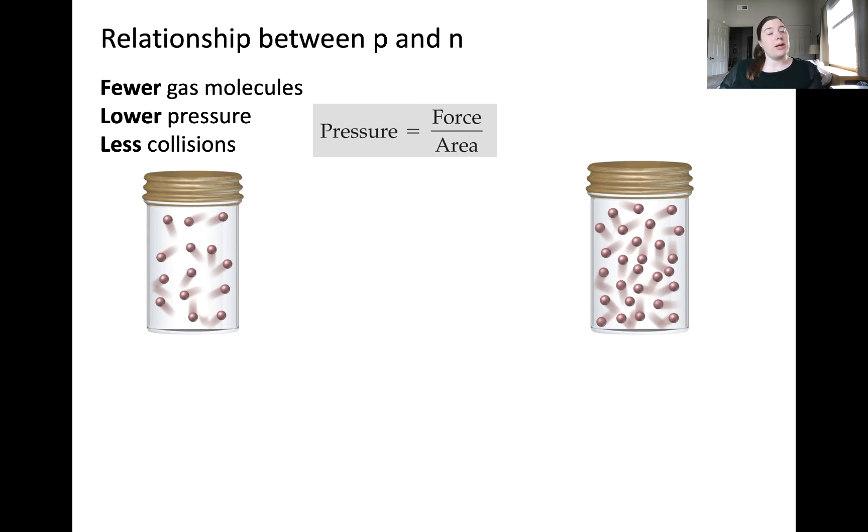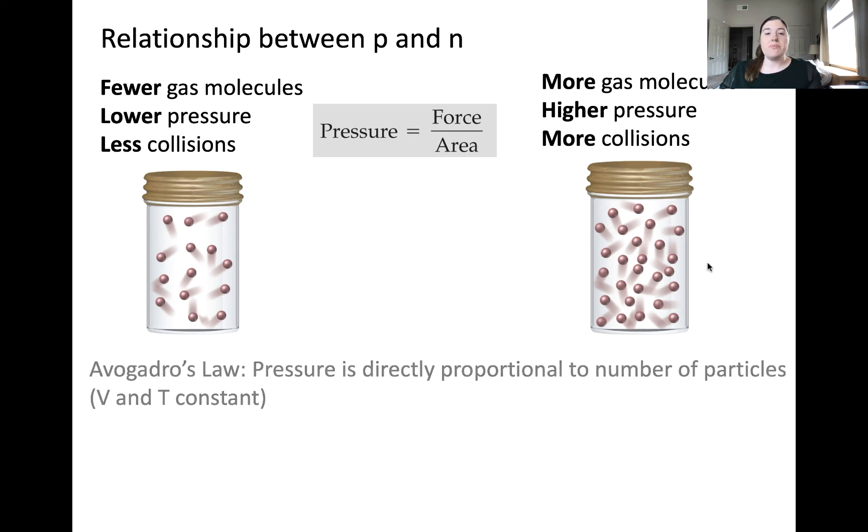Let's look at the relationship between pressure and the amount of gas in the system. Here are two containers that have different numbers of gas particles, but are otherwise identical. What would you predict would happen to pressure when increasing the amount of gas in the container? We would expect that the more gas molecules there are in the container, the more collisions with the walls, and therefore the higher pressure. This can be summarized as a direct proportionality. More particles in the container lead to a greater pressure.